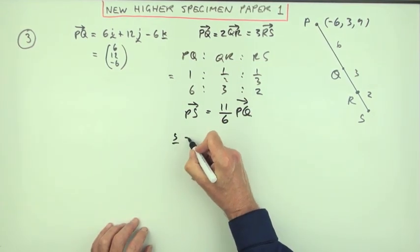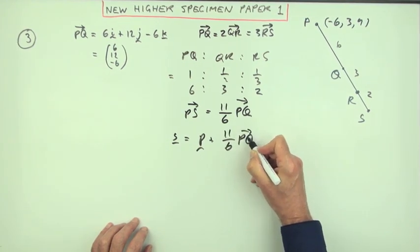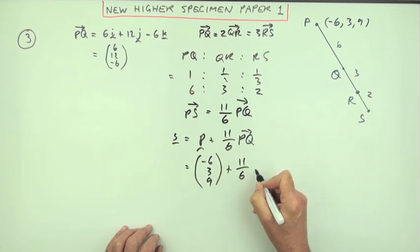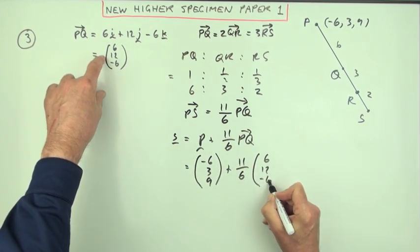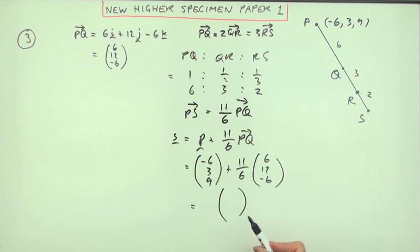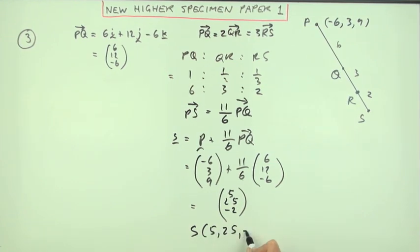So how could I get S straight away? Start at P and add on 11/6 of PQ. Let's put down a couple of brackets. P was -6, 3, 9. 11/6 of 6, 12, -6. And I think with only a little bit of arithmetic I can go straight down to a bracket here simply by doing this calculation: 6 into 6 goes 1, times 11 is 11, take away 6 is 5. 6 into 12 goes 2, 22 and 3 is 25. 6 into -6 is -1, -11 plus 9 is -2. There we go: 5, 25, -2.